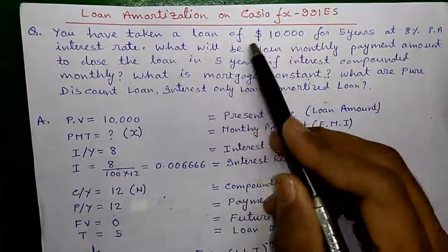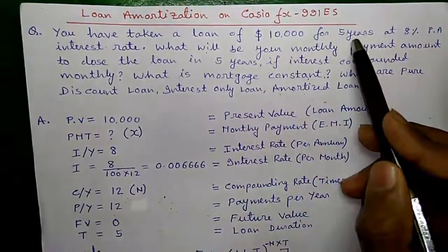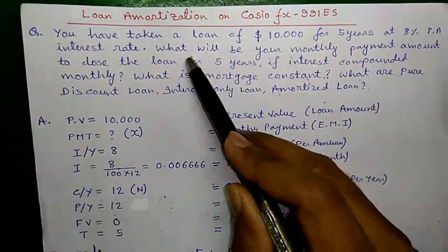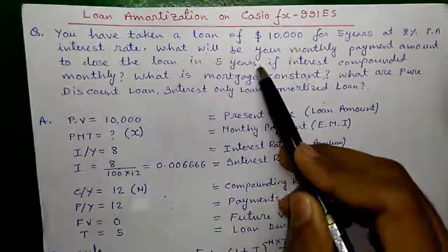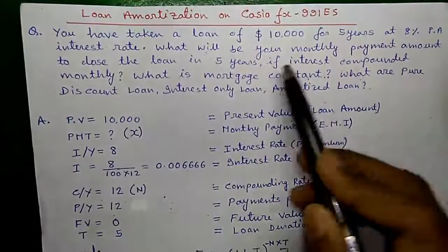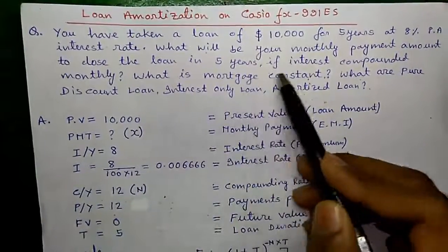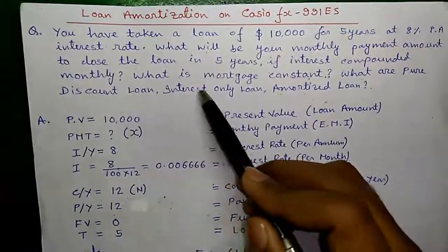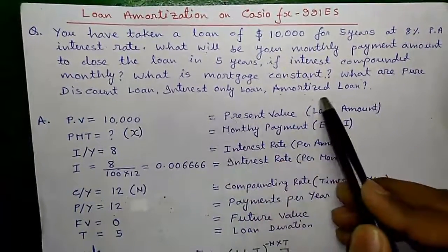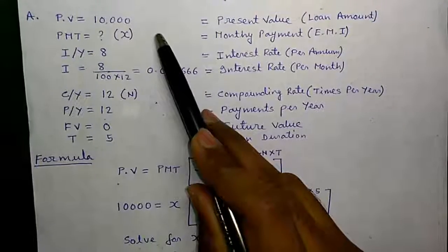You have taken a loan of $10,000 for 5 years at 8% per annum interest rate. What will be your monthly payment amount to close the loan in 5 years if interest is compounded monthly? What is mortgage constant for this case, and what are pure discount loan, interest only loan, and amortized loan? Let's understand the question.